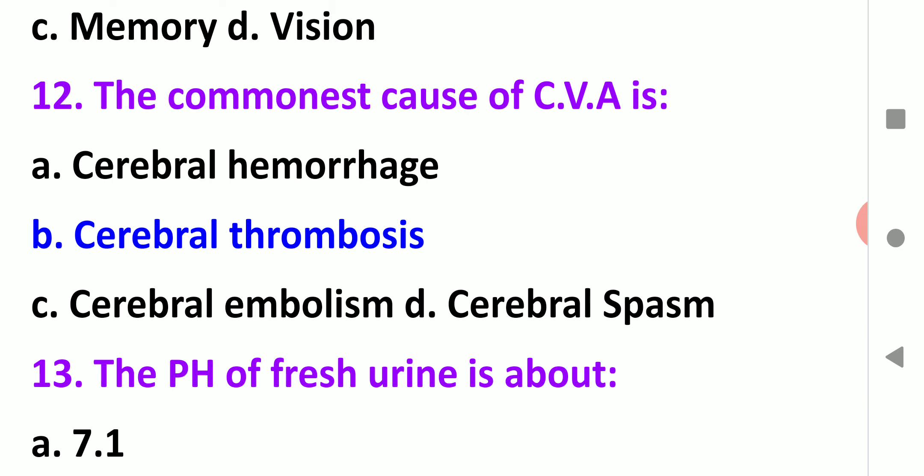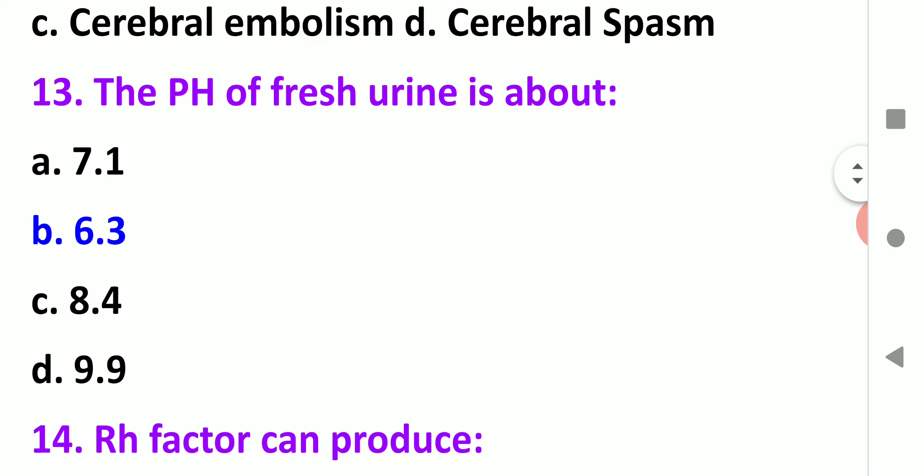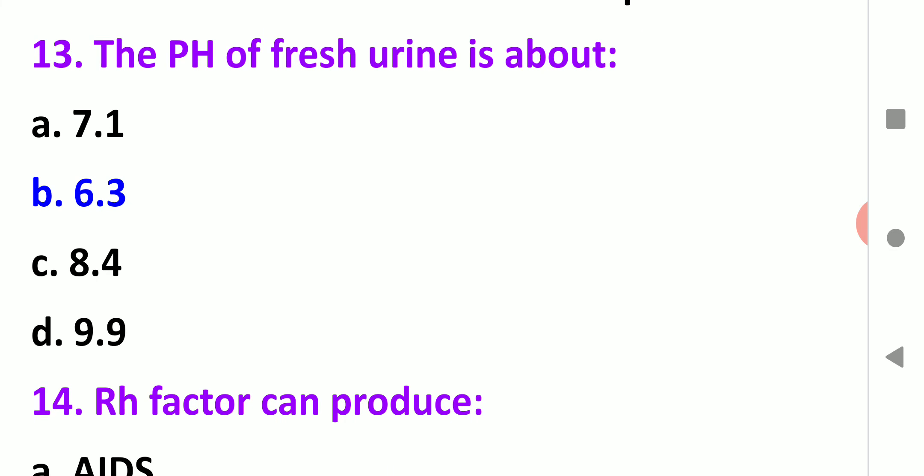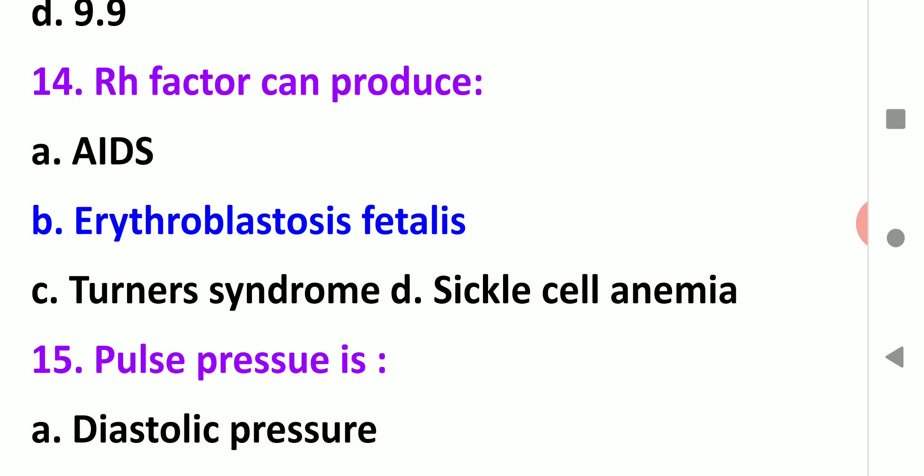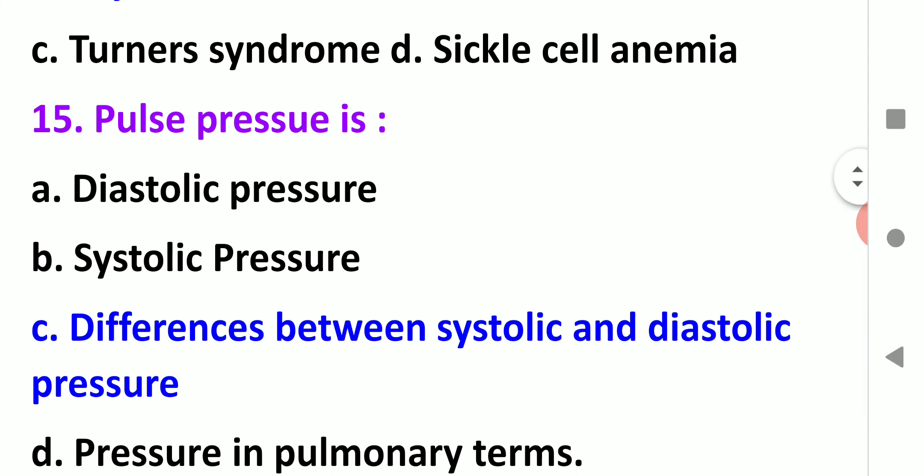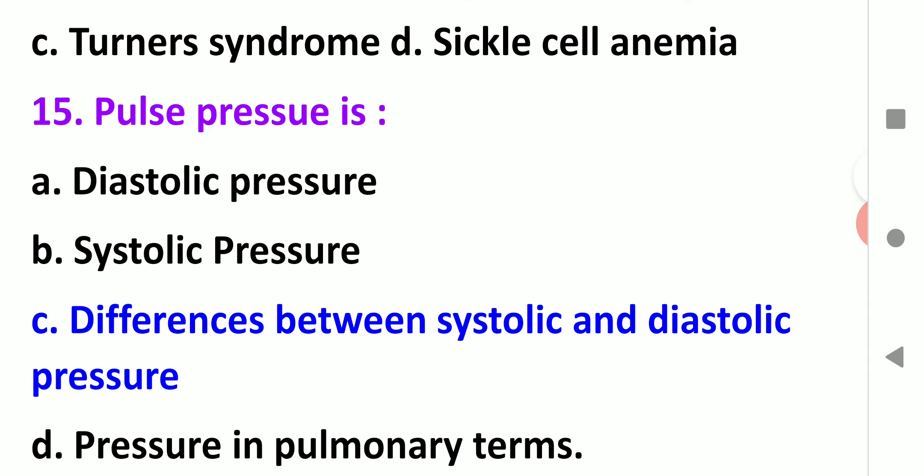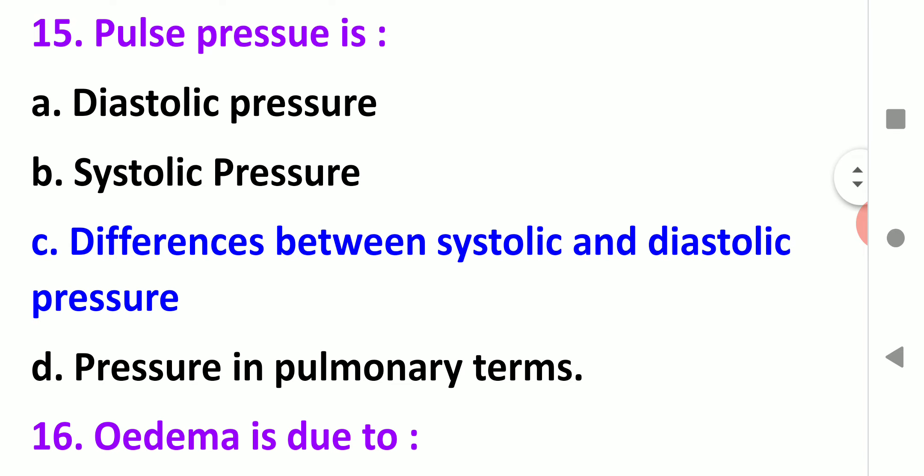The commonest cause of CVA, cerebrovascular accident or stroke, is atherosclerosis or thrombosis, which we call cerebral thrombosis. Next, the pH of fresh urine is 6.2 to 6.3 range, so the correct option is B. Rh factor can produce erythroblastosis fetalis, which is a condition that you can see in the newborn because of the presence of this Rh factor.